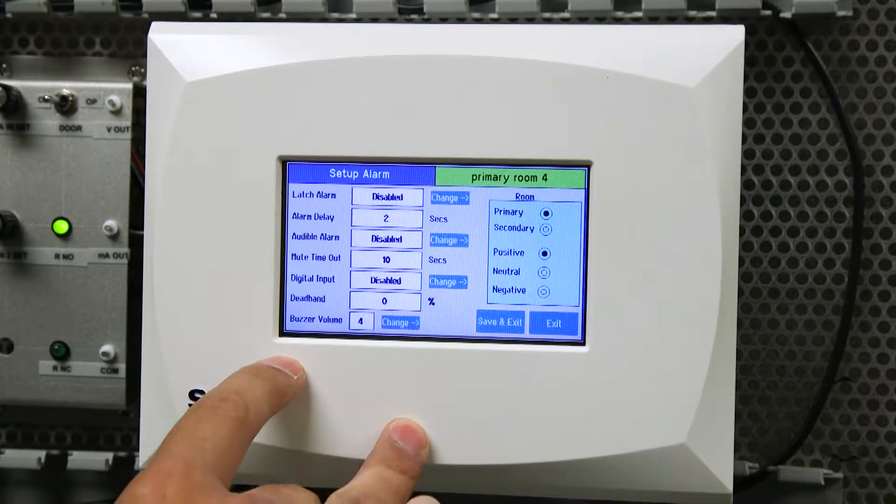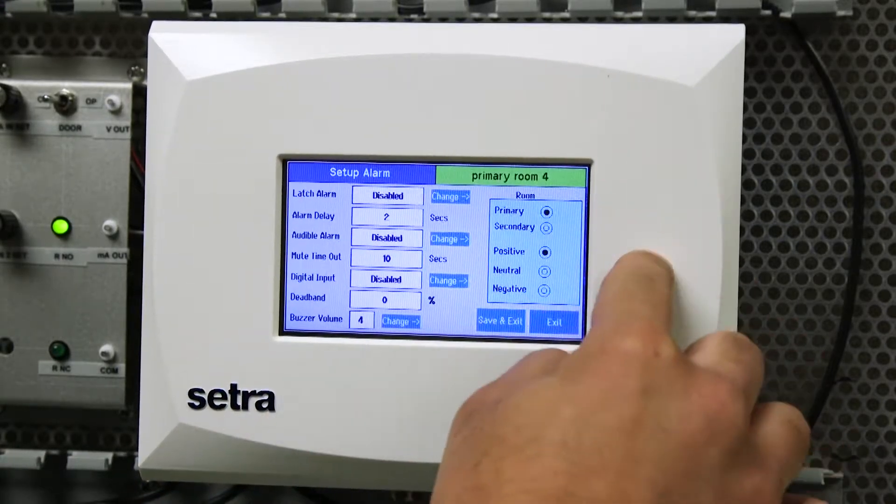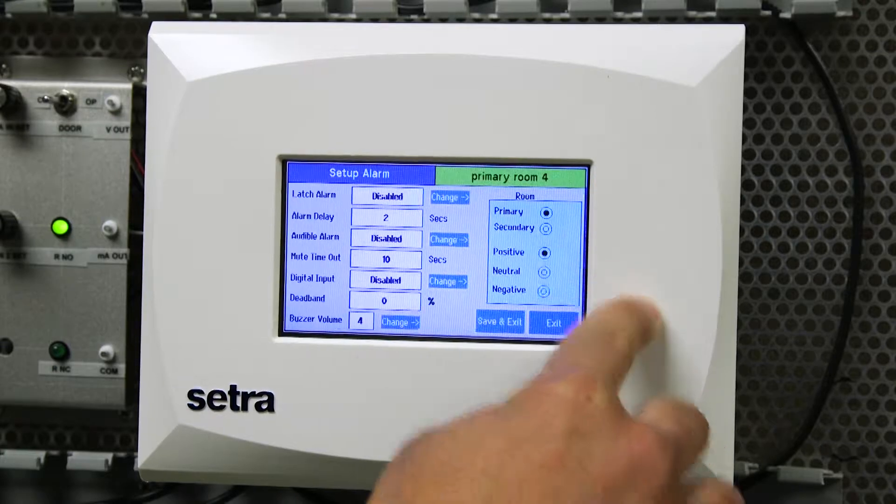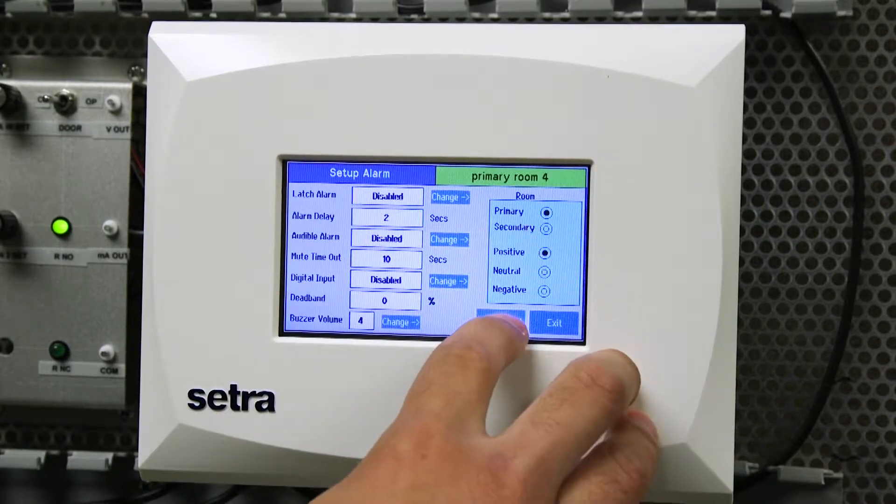We'll move over to setup alarm. This is where we will set if we want the primary room to be positive, negative and neutral parameters. So we'll set this as a primary room, positive and hit save and exit.